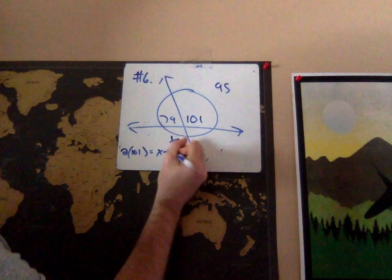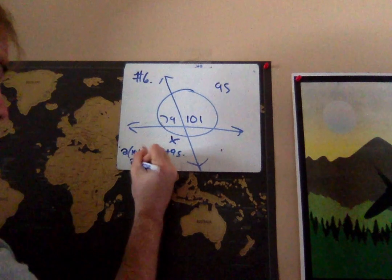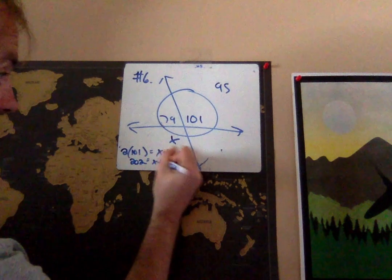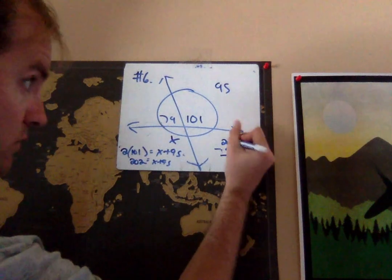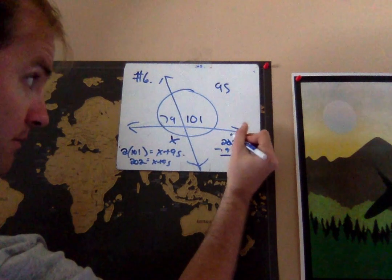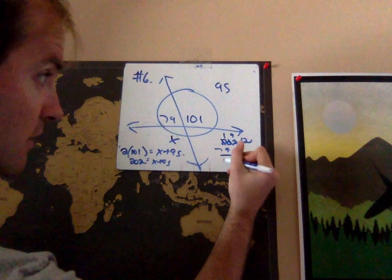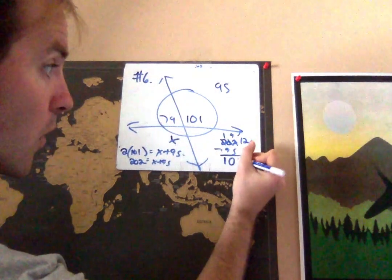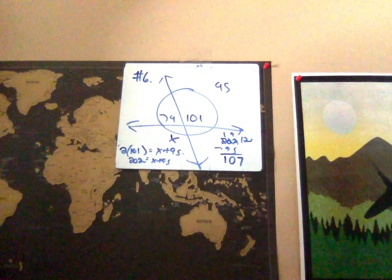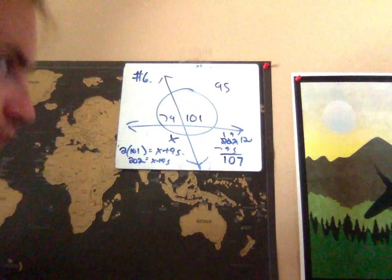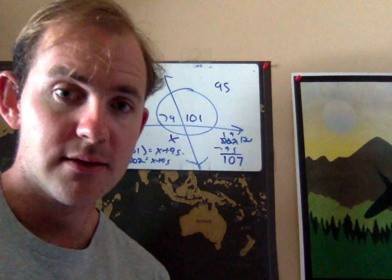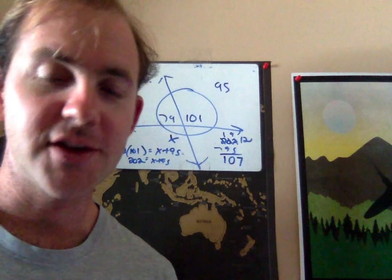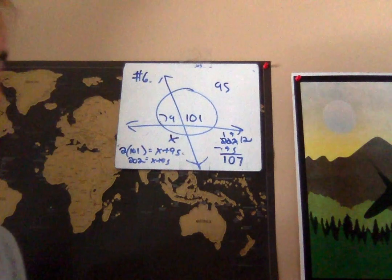I'm going to say it's going to take me two 101s to equal X plus 95. So that's 202 equals X plus 95. Let's do a little subtraction here. I have to borrow there and borrow there, so I'm going to get 107.